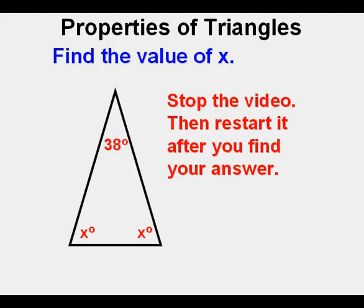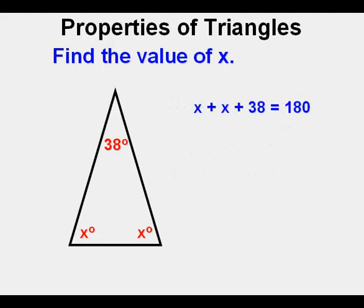Using the triangle sum theorem, we set up the equation X plus X plus 38 equals 180. Combining like terms, we have 2X plus 38 equals 180. We subtract 38 from each side. Cancel. Bring down what's left. 2X equals 142.